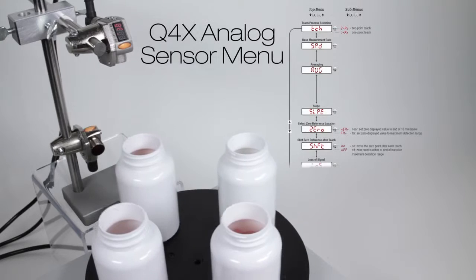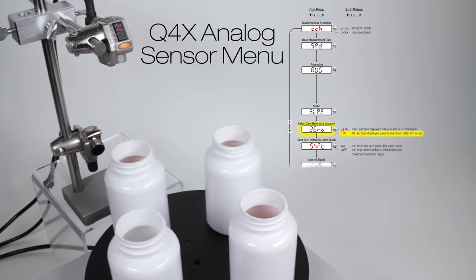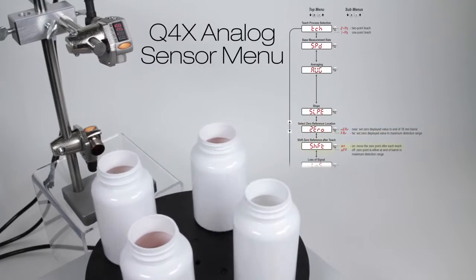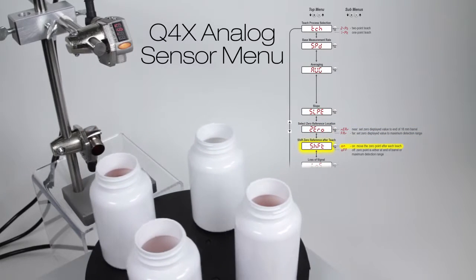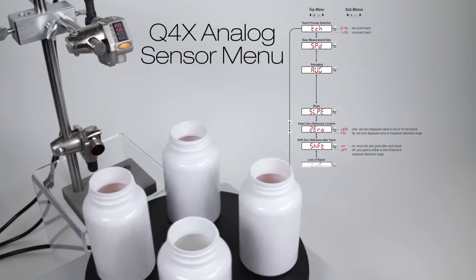By default, the analog Q4x sensor is set up for two-point teach. For this application, the display zero has been set to FAR, and the reference shift option has been turned on. With these settings, the display measurement will be relative to the zero-volt top point.